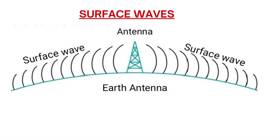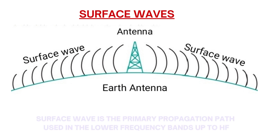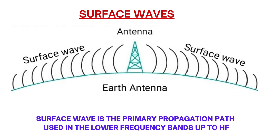Surface waves: as the name suggests, these waves travel along the surface of the earth. Due to diffraction these waves bend, and due to attenuation waves lose their strength and tilt. Only VLF, LF and MF are capable of traveling along the surface of the earth. As frequency increases, surface attenuation increases and waves cannot travel long distances. Surface wave is the primary propagation path used in lower frequency bands up to HF.